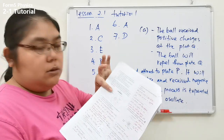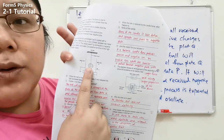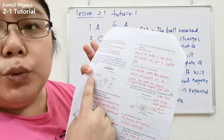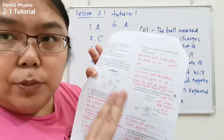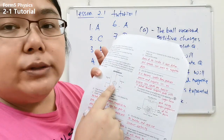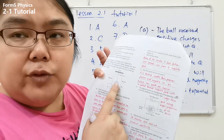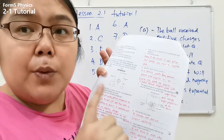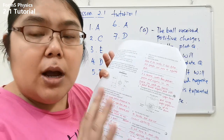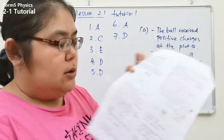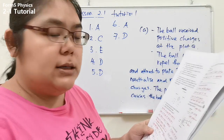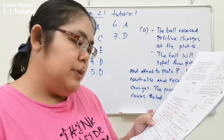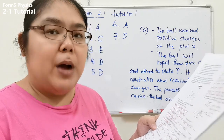How to increase the oscillation speed: Number one — make the two plates closer, reducing the distance between the two plates. Number two — use a lighter ball, reducing the mass of the ball. Number three — increase the voltage of the power supply. So the answers are: decrease distance between two plates, decrease mass of the ball, and increase the voltage of the power supply.